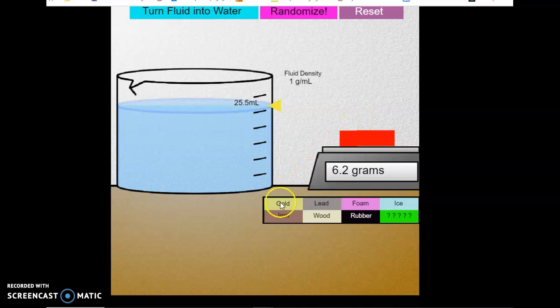I want you to pick one of these materials. We have gold, lead, foam, ice, iron, wood, and rubber. I want you to choose one at a time. This time I am going to choose gold. It is placed right here, this is a gold piece.